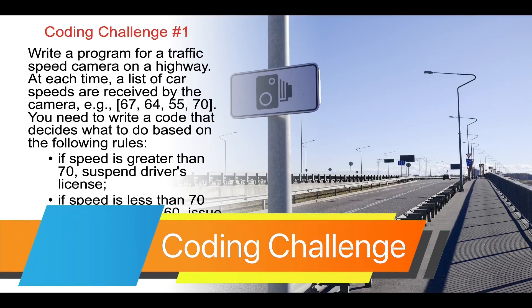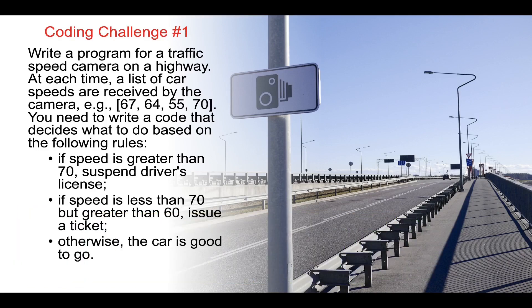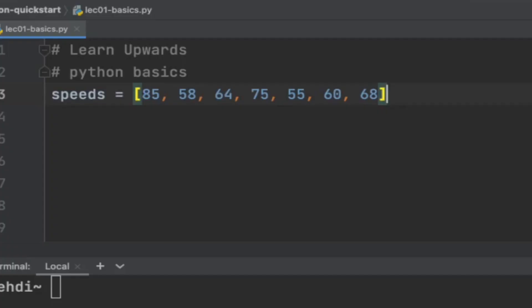Coding challenge: write a program for a traffic speed camera on a highway. At each time, a list of car speeds is received. You need to write code that decides what to do based on the following rules: if speed is greater than 70, suspend the driver's license; if speed is less than 70 but greater than 60, issue a ticket; otherwise, the car is good to go. Pause the video, spend two to five minutes writing your code, then check my solution.